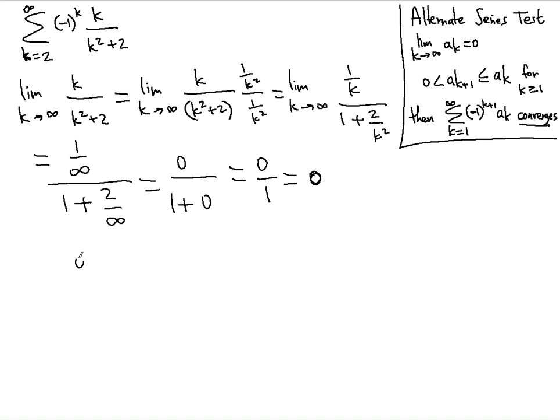The second condition states that 0 must be less than the next term, which is k plus 1 over k plus 1 squared. You're replacing basically k with k plus 1, plus 2. And that's supposedly less than or equal to the current term, which is just k over k squared plus 2.